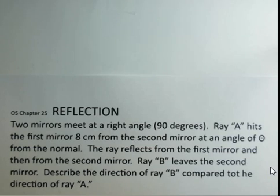And it has some angle theta, not going to use a number of degrees, just saying some general angle theta, and that's away from the normal. So it's going to reflect from the first mirror, it's going to bounce over and hit the second mirror, and then ray B is the ray leaving the second mirror. And we're interested, what's the orientation of ray B compared to ray A?